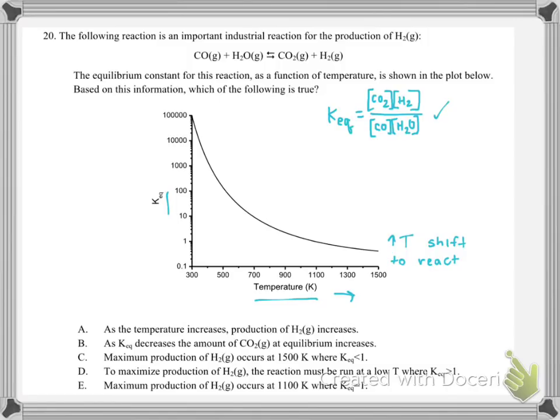Let's look at the options. A says as temperature increases, production of H₂ increases. We decided that must be false, because increasing temperature is shifting toward reactants, and H₂ is a product — so nope.